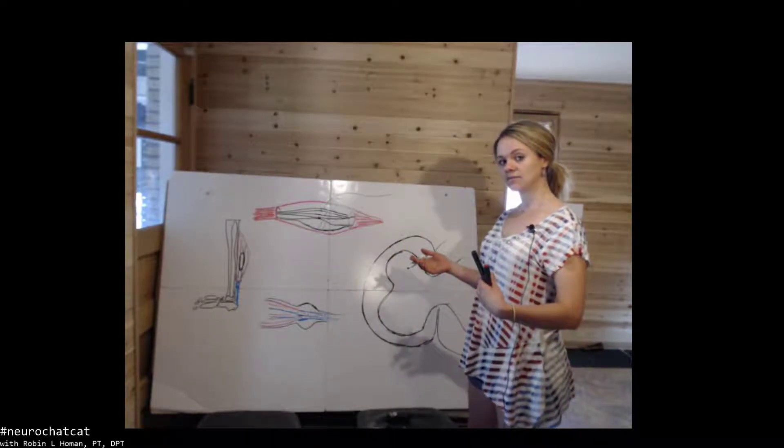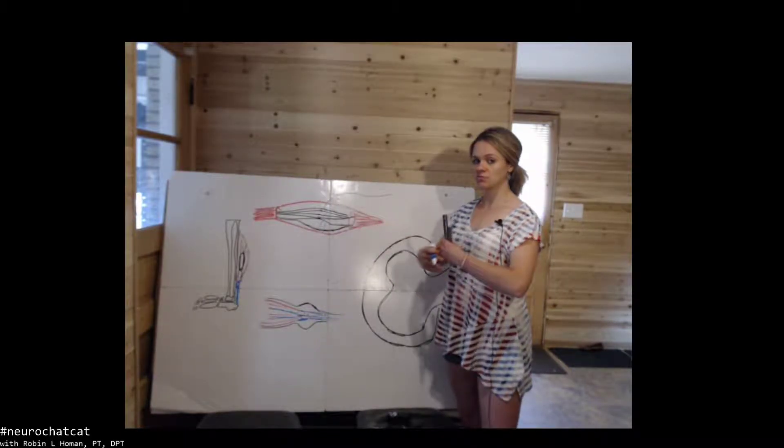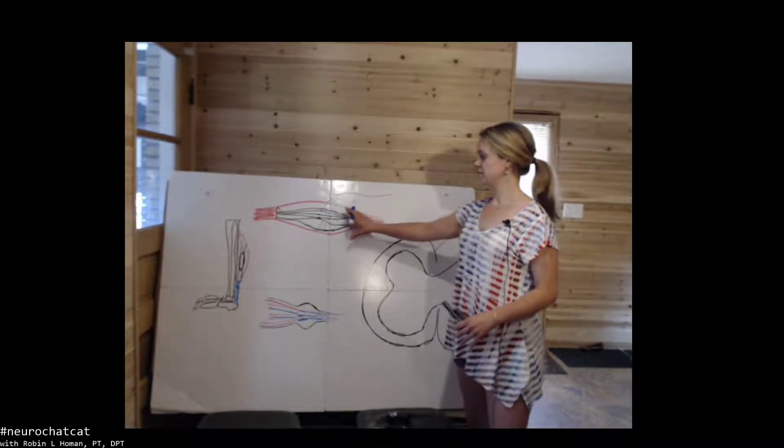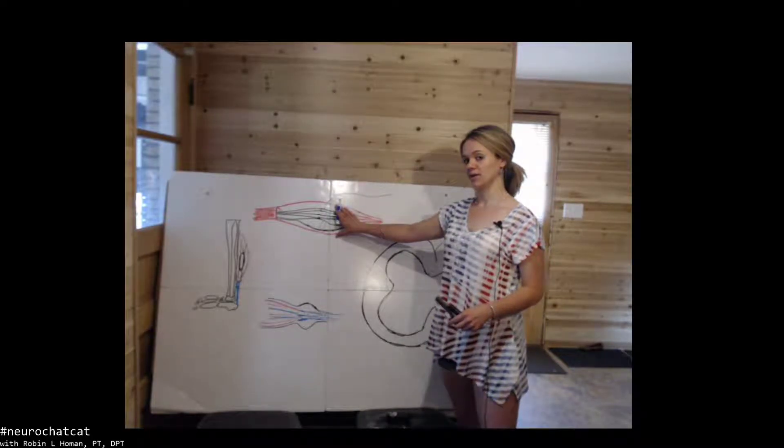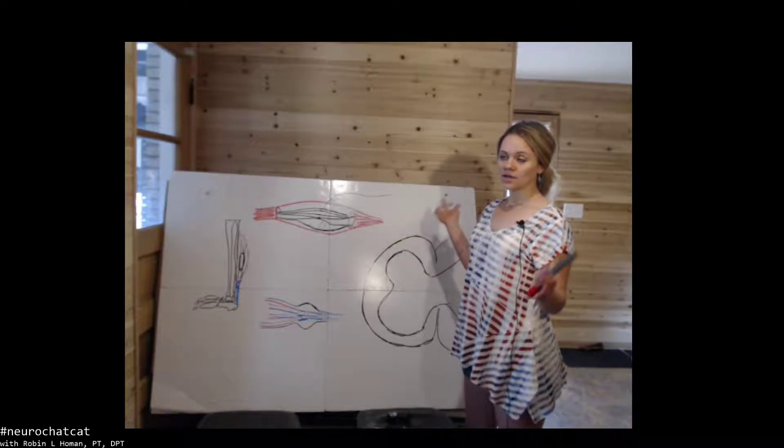So as the muscle contracts, it compresses on this nerve ending. As the muscle lengthens, tensile load force upon the nerve ending. And depending on the force, it will either excite or inhibit the nerve ending.